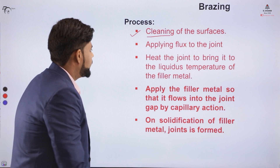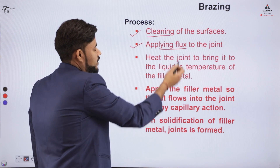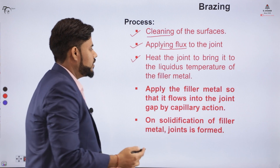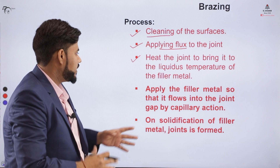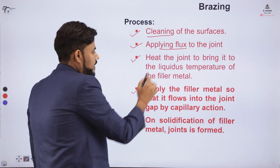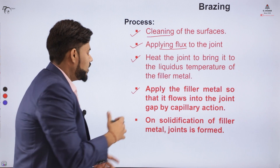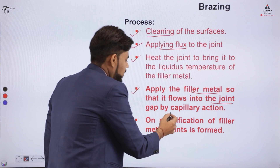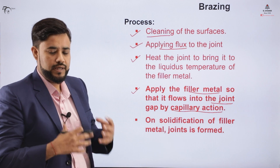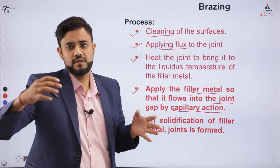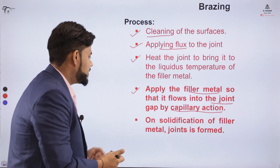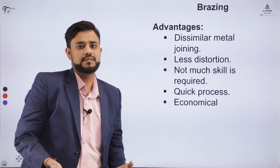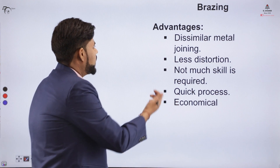To summarize the process: we clean the surfaces, apply flux, and heat the joint. Then we apply the filler material to the heated metal. The filler material flows into the gap maintained between the joint — the gap creates capillary action, drawing the filler material inside. On solidification, a solid joint is formed.